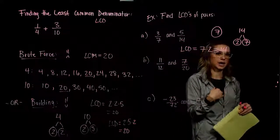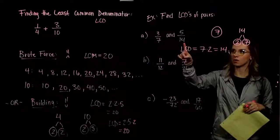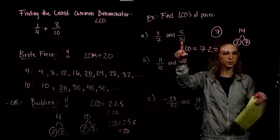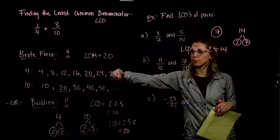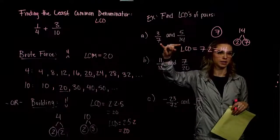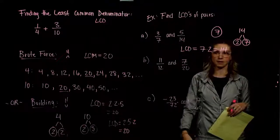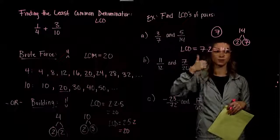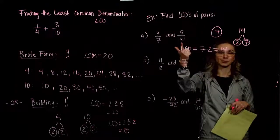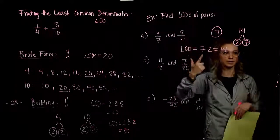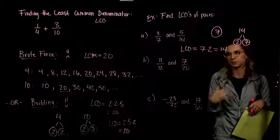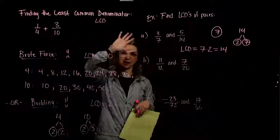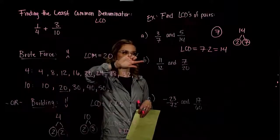Sometimes the least common denominator is already one of the values present. Using brute force here would only take about 2 seconds: multiples of 7 are 7, 14... multiples of 14 are 14, 28... The very first multiple of 14 is what they share in common. But it's not always going to work out like that, so let's keep practicing.